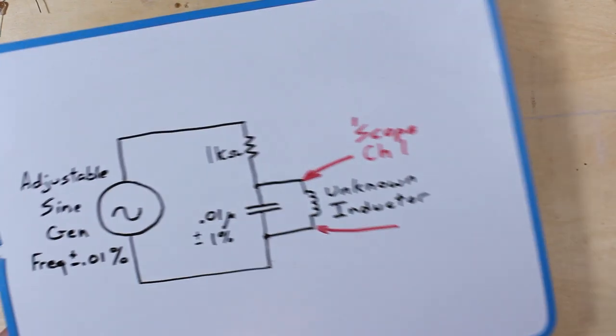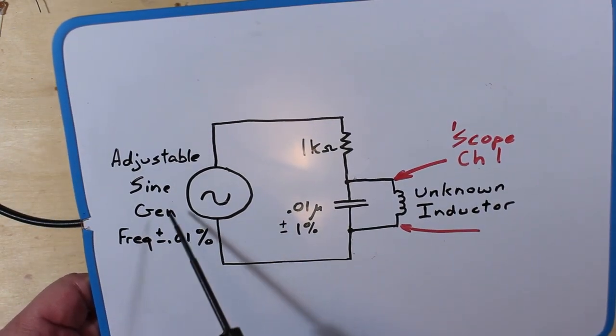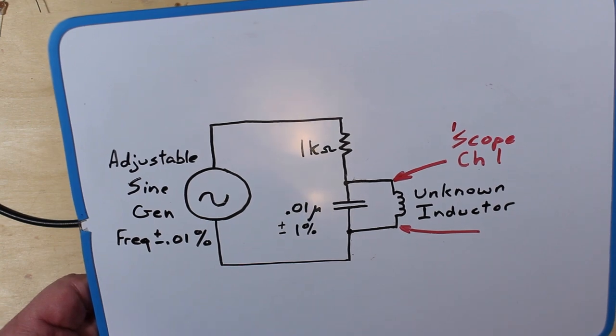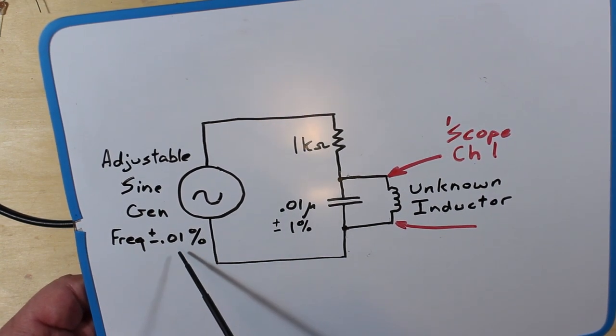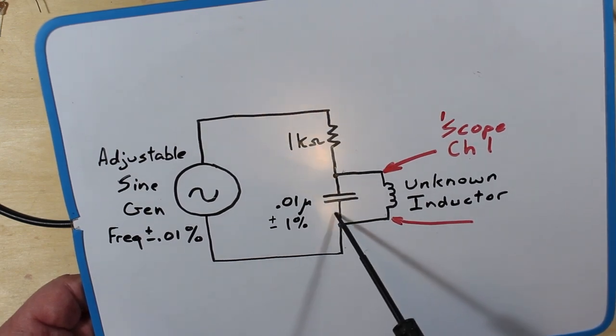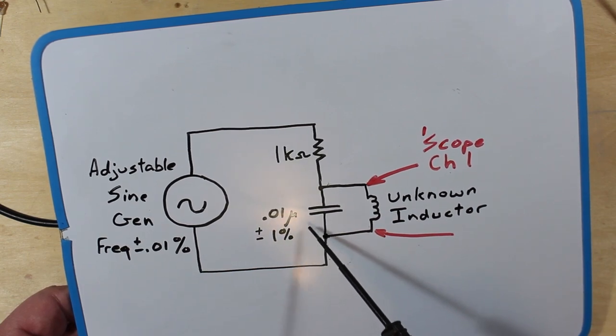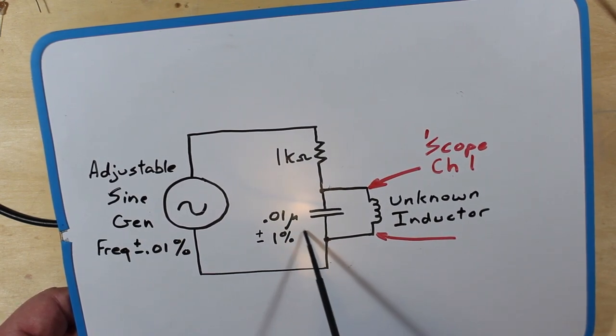And here's a schematic of the circuit itself. We've got the adjustable sine wave generator here. Its frequency accuracy is basically known to a hundredth of a percent. The capacitor that we have in here that we're going to be using as our half of our tuned circuit here is 1%.